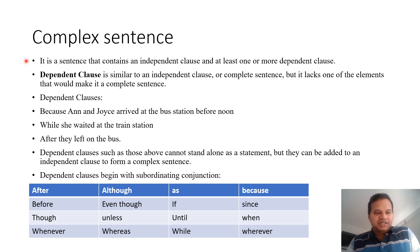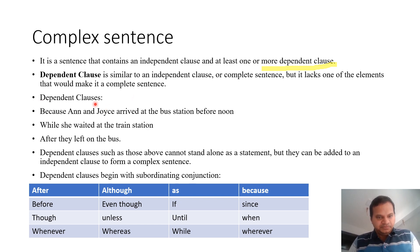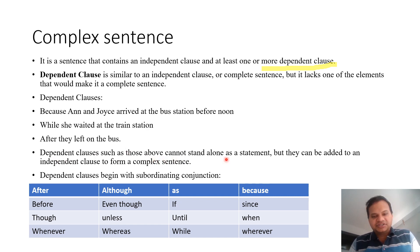Now we come to the complex sentence. It is a sentence that contains an independent clause and at least one or more dependent clauses. A dependent clause is similar to an independent clause or complete sentence, but it lacks one of the elements that would make it a complete sentence. For example: 'Because Ann and Joyce arrived at the bus station before noon while she arrived at the train station after they left on the bus.' Dependent clauses such as those above can't stand alone as a statement.